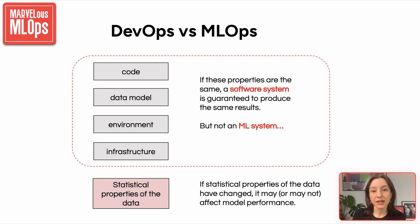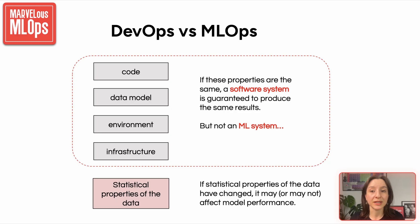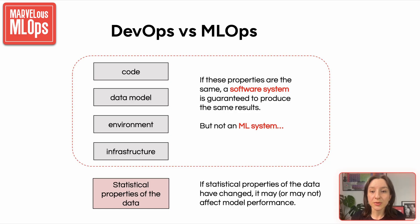In traditional software systems, if you keep everything the same — the code, the model, environment, infrastructure — you can expect exactly the same behavior every time. It is predictable and deterministic. But in machine learning systems, it's different. Even if all those components remain unchanged, your model's performance can degrade and behave differently. Why? Because ML systems are heavily influenced by the statistical properties of data flowing through them. So if user behavior shifts, or there are seasonality changes, or if upstream data pipelines start emitting slightly different distributions, your model might start underperforming. This is why MLOps introduces new challenges that don't exist in traditional DevOps — we are not just monitoring system components, we are also monitoring data drift, model drift, and the health of statistical assumptions.